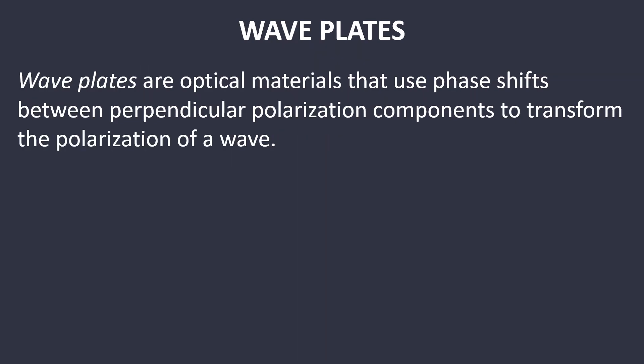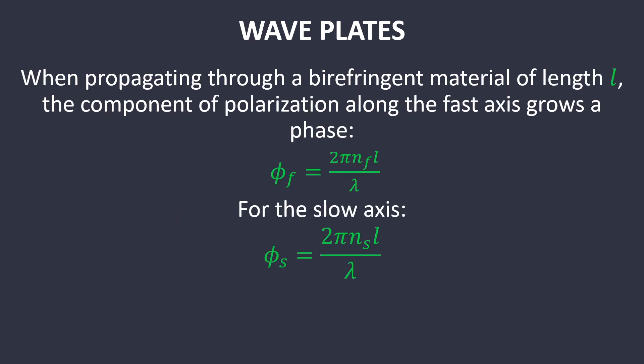Waveplates are optical materials that use phase shifts between perpendicular polarization components to transform the polarization of a wave. Anything that transforms the polarization of a wave is called a waveplate. When an electromagnetic wave propagates through a birefringent material of length L, the component of polarization along the fast axis garners a phase shift, and this new phase shift is called the fast phase shift.